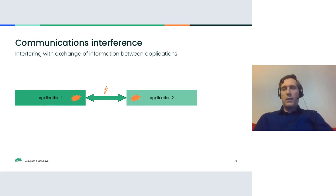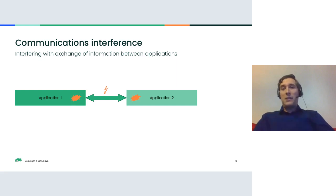Finally, when communicating via the network or a bus, it might happen that due to two senders transmitting at the same time or some other external factor, there is an interruption of communication. This leads to a failure on the sender side — possibly needing to repeat the transmission — and also affects the intended receiver who simply did not get the intended information.